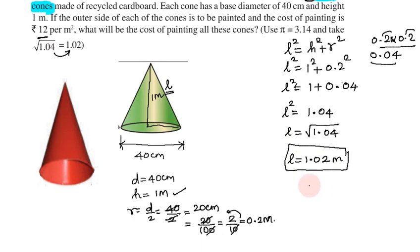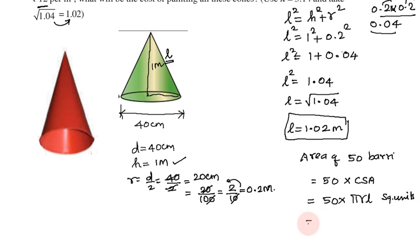So this is the slant height. Area of 50 barricades: 50 barricades means 50 times the curved surface area, which is 50 into πrl square units.